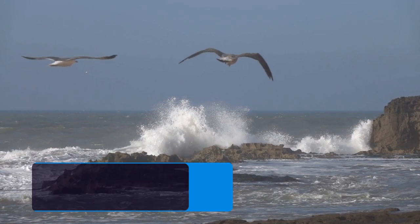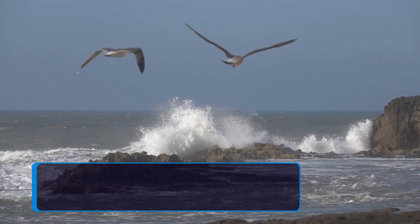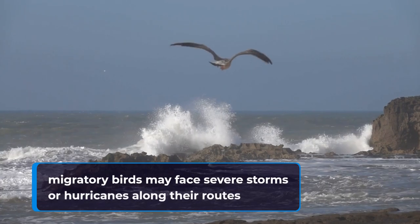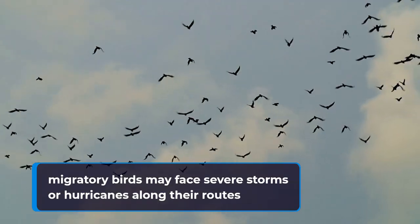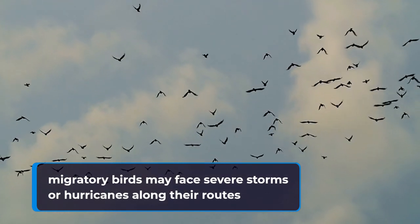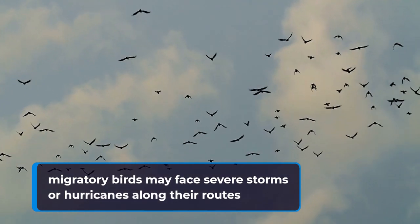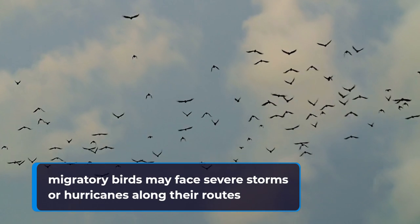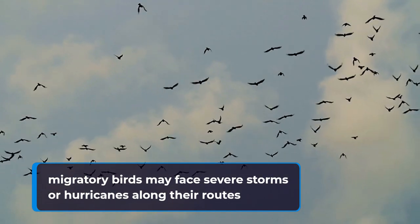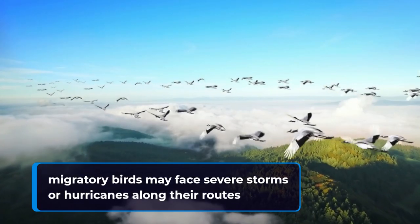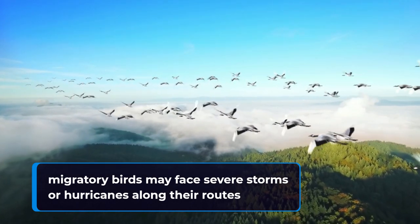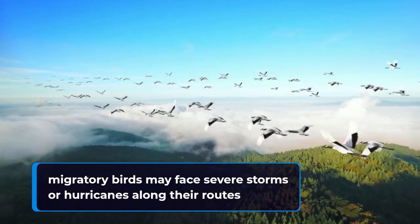Weather conditions can also pose a significant challenge to migrating animals. For example, migratory birds may face severe storms or hurricanes along their routes, which can cause significant injury or death. Similarly, animals that migrate through harsh environments, such as the Arctic tundra or deserts, may face extreme temperatures and limited resources, making survival a challenge.